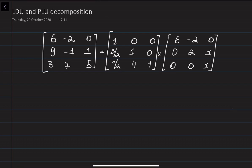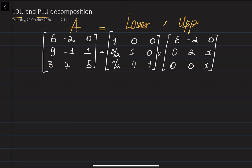Hi, my name is Bohader Ahmedref. In this video lecture we are going to discuss about matrix factorization. We are going to discuss two different modifications of the LU decomposition, namely LDU decomposition and PLU decomposition. If you remember, previously we talked about the LU decomposition, and essentially what we want is to write down the matrix A as the multiplication of a lower triangular matrix times an upper triangular matrix.